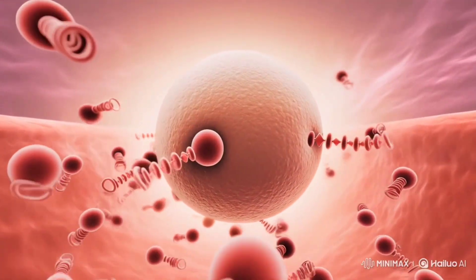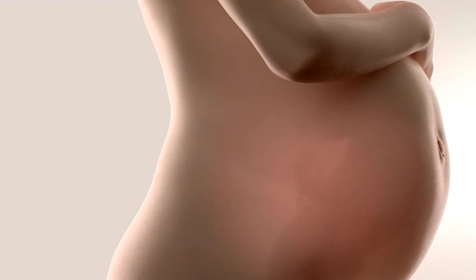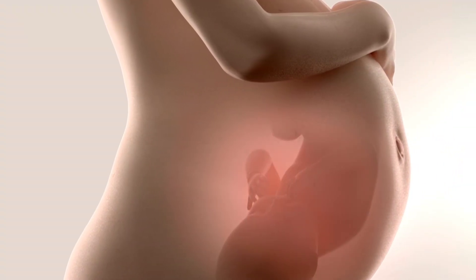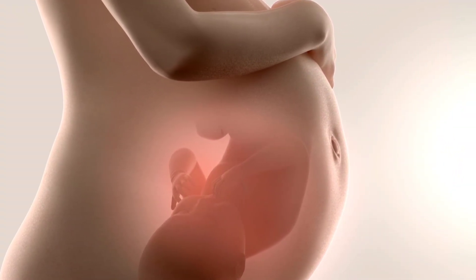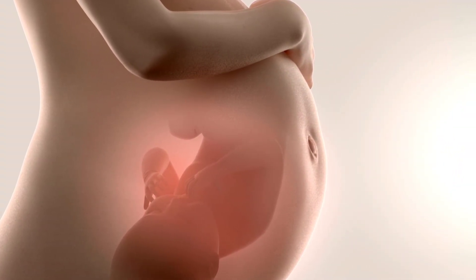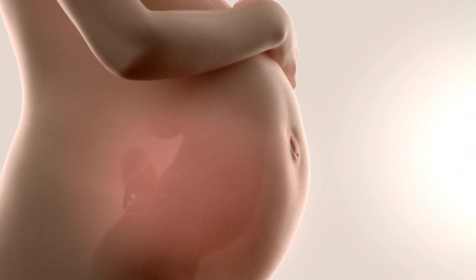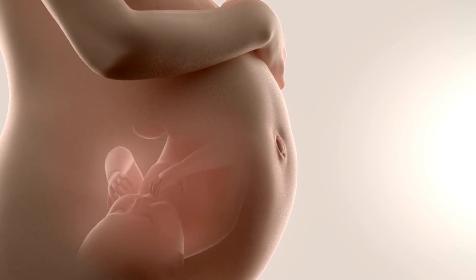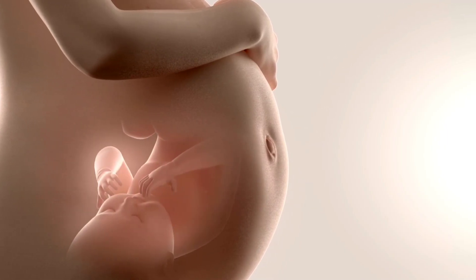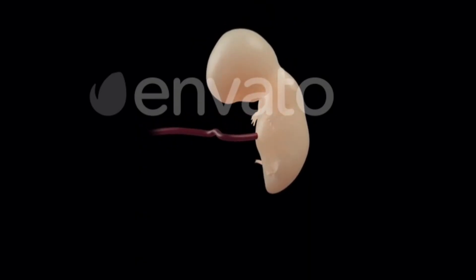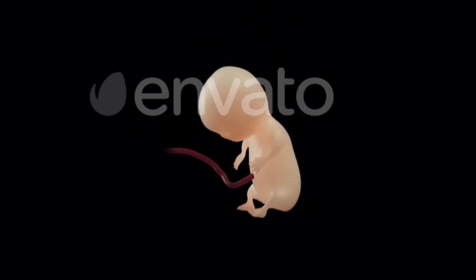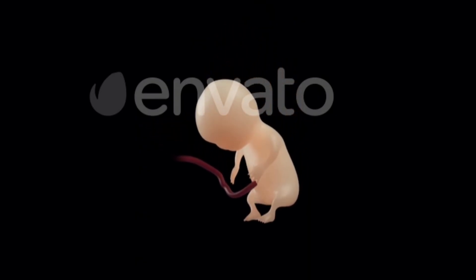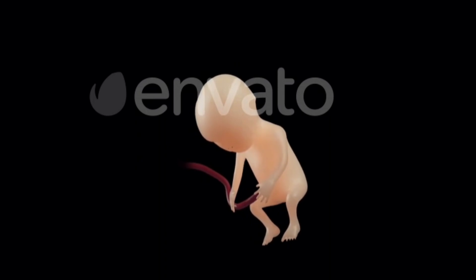The developing baby is called an embryo for the first eight weeks. After this period, it's referred to as a fetus. During these months, the fetus develops organs, limbs, and facial features, preparing for life outside the womb.